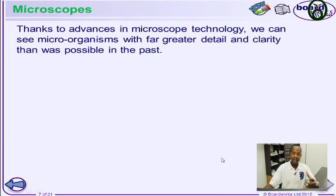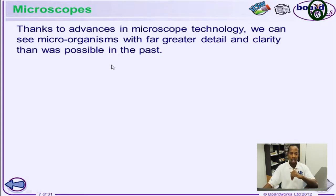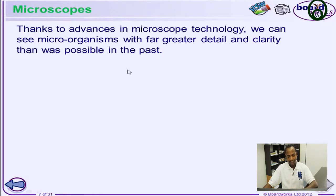Since cells are so small they cannot be seen by our naked eyes in some cases, how do we see them? We use tools such as a microscope — which we will also study in physics — to look at cells and see their internal structure and composition.